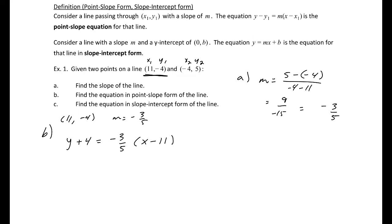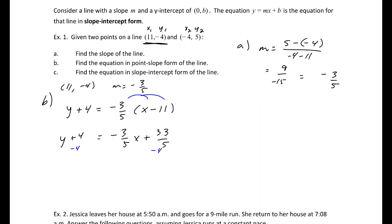For part C, we want to find the slope-intercept form. Rearranging and distributing: negative 3/5 x plus 33/5. Then y plus 4, subtracting 4 — that would be 20/5, so 33/5 minus 20/5 is 13/5. So y equals negative 3/5 x plus 13/5 is our equation in slope-intercept form.